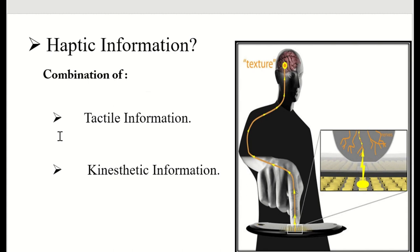Haptic feedback can be conveyed in two forms. The first is tactile information, which refers to information acquired by the skin and touch sensors. The second relates to the joints of the human body. For example, when we use a smartphone by touching with our fingers, the touch felt by our body is called haptic information. The smartphone is the best example of haptic technology.